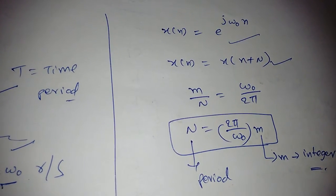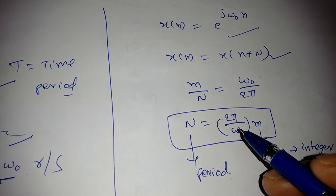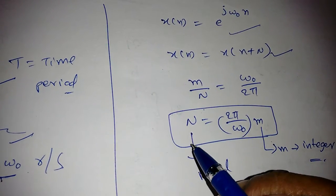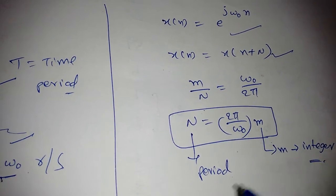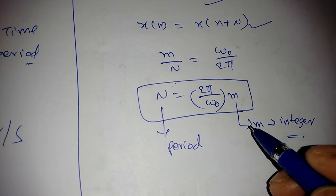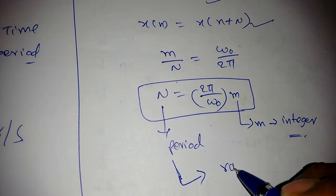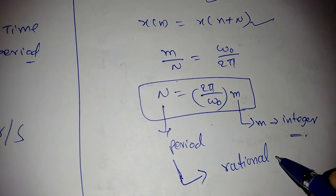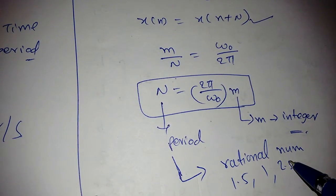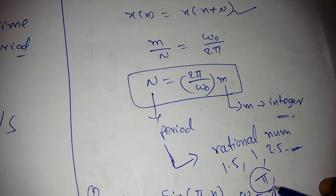For discrete-time periodic signals, the condition is that m/N = ω₀/(2π), or equivalently the period N = (2π/ω₀)·m, where m is an integer. The result must be a rational number — it should not be irrational like π. If N is irrational, the signal is not periodic.